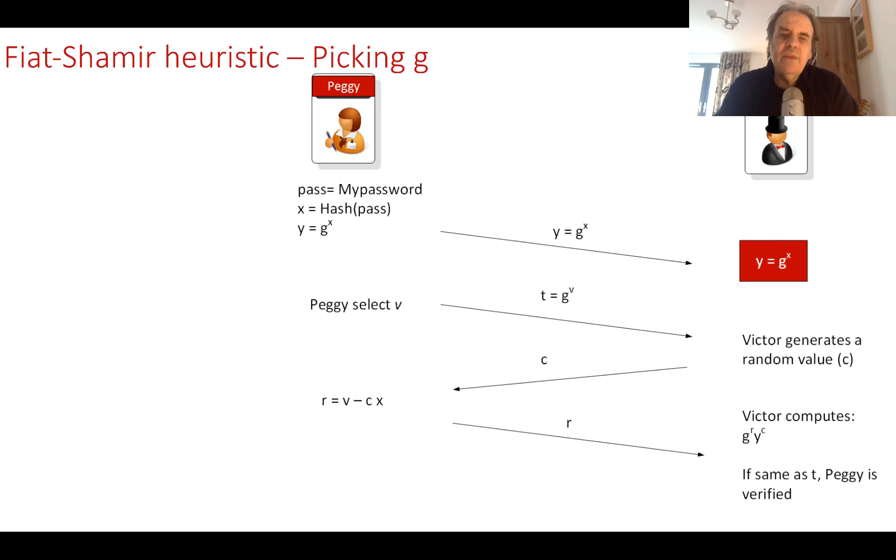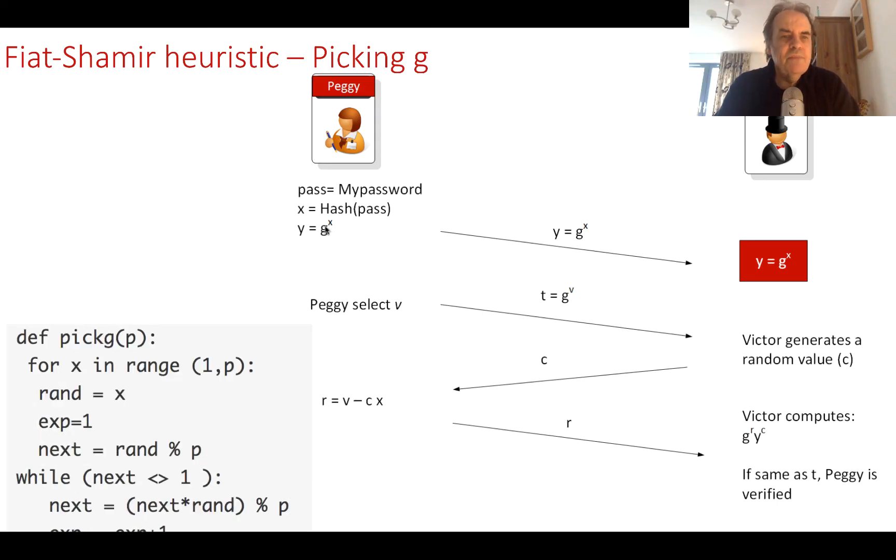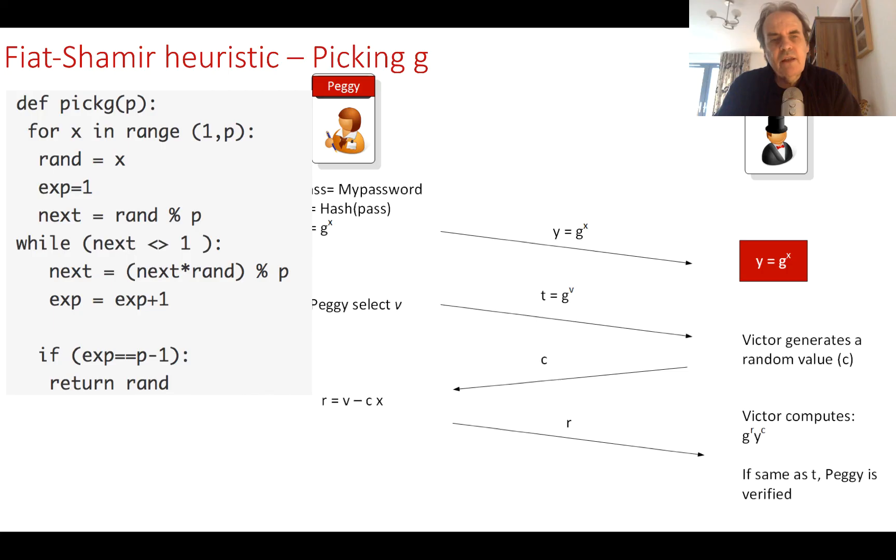Finally, we need to pick a value of g that will make it work - not all values of g work. You can look at another lecture to see what the problem is, but this is the method here that allows us to pick a value of g for the prime number that we select. If we select that correctly, we'll be able to generate a value for g that will work for both Peggy and Victor.